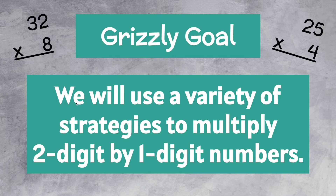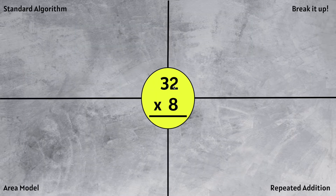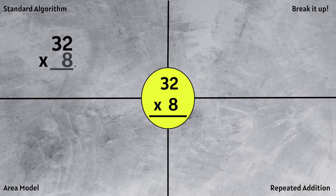Welcome back Math Grizz. Today we will use a variety of strategies to multiply two digit by one digit numbers. Let's start with 32 times 8, using the standard algorithm.